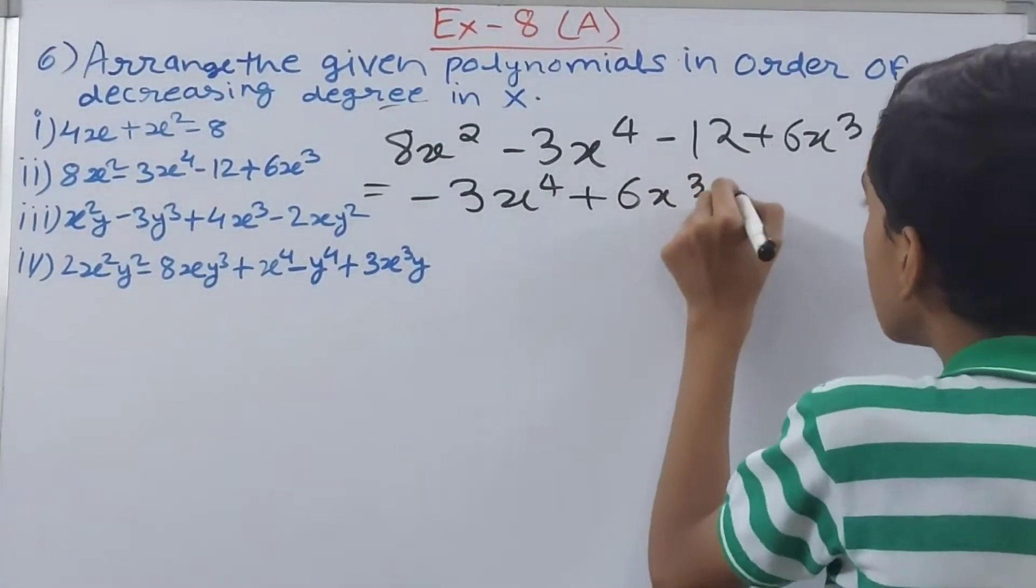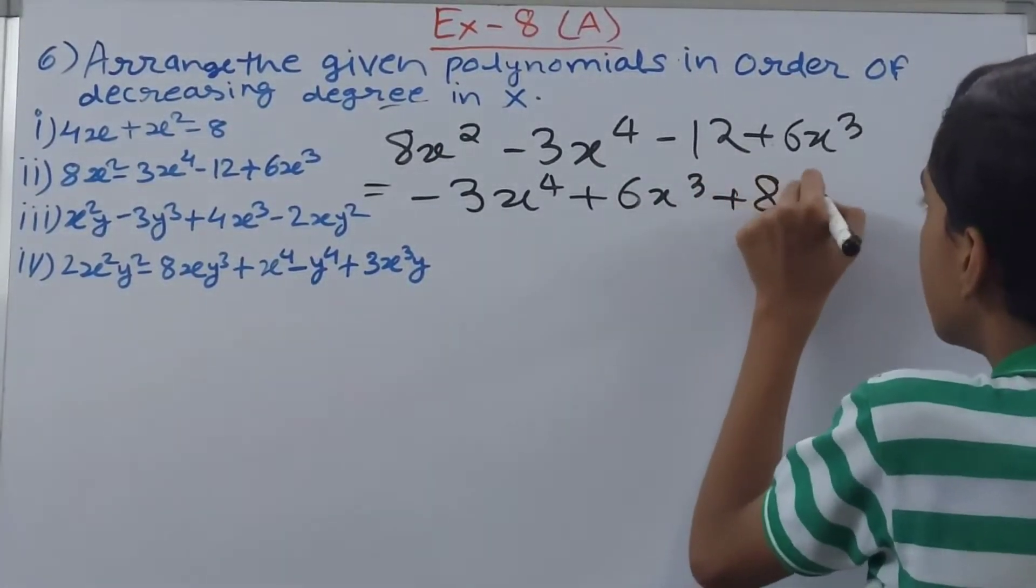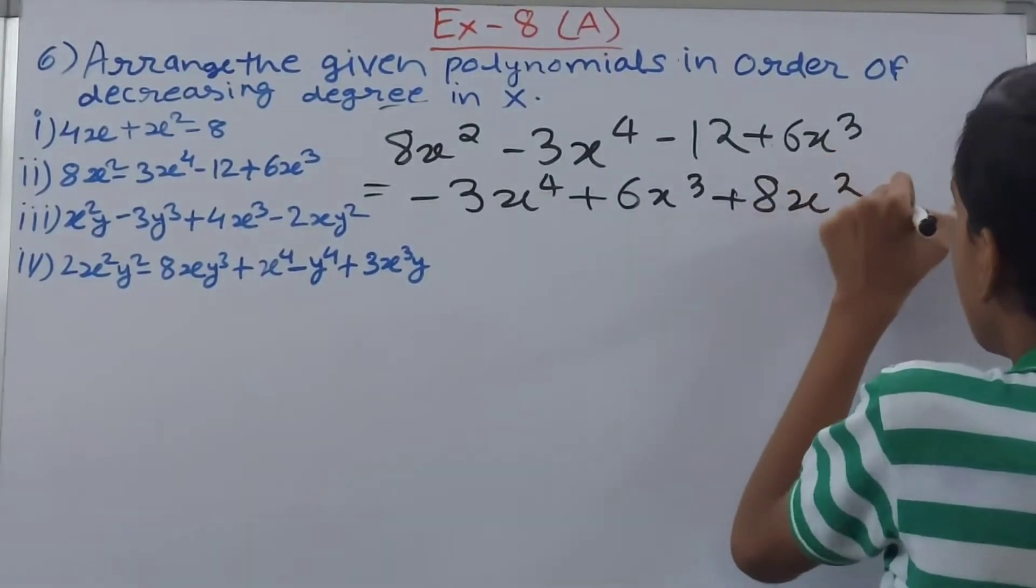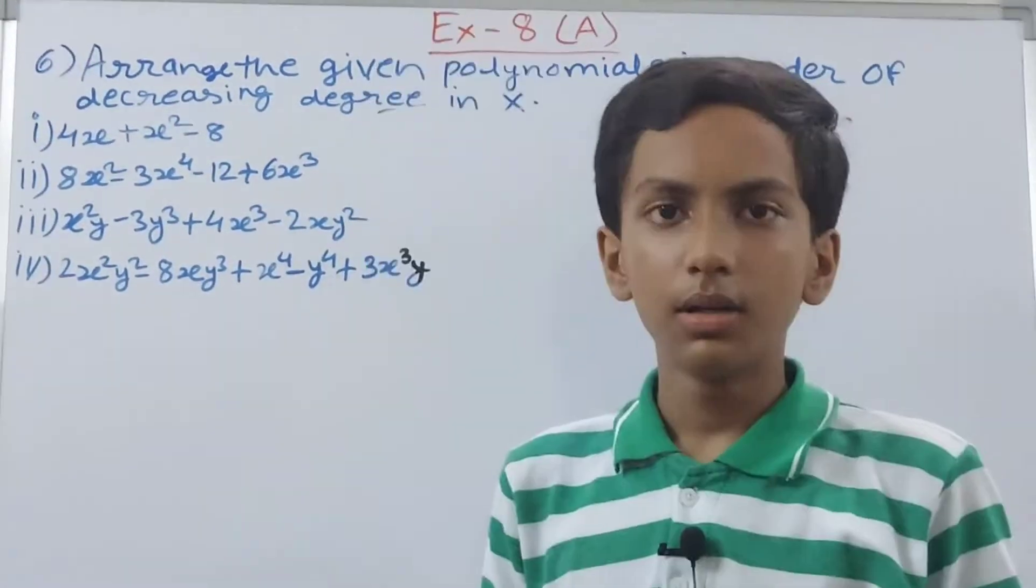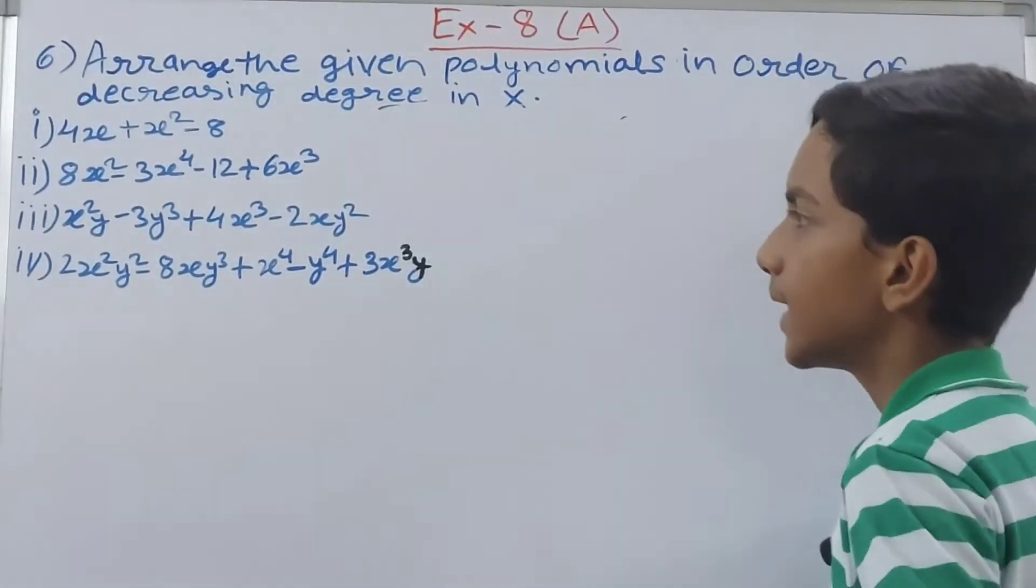Now we have this plus 8x square, so plus 8x square, and in last minus 12. So this is our answer. Let's move on to the next part.